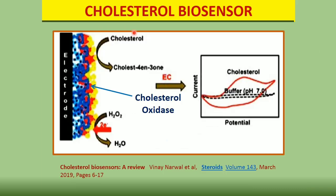Similar to the glucose biosensor, a cholesterol biosensor was developed using cholesterol oxidase enzyme. This enzyme oxidizes cholesterol to cholestenone, generating hydrogen peroxide. This hydrogen peroxide undergoes redox reaction, giving an increase in current as seen in the cyclic voltammogram — a plot of current versus potential. With increasing concentration of cholesterol, more hydrogen peroxide is generated and the peak current also increases.